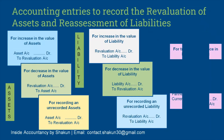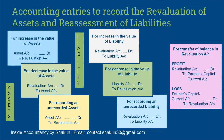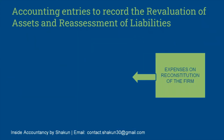After recording increases and decreases in values of assets and liabilities, there will be a certain profit or loss when balancing the revaluation account. In case of profit — if the total of the credit side is more than the debit side — it leads to a net gain, and revaluation account is debited while partners' capital or current account is credited. In case of loss — if the total of the debit side is more — revaluation account is credited and partners' capital or current account is debited.